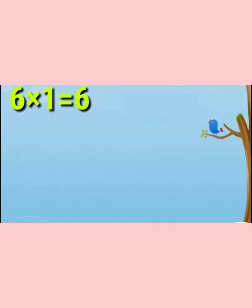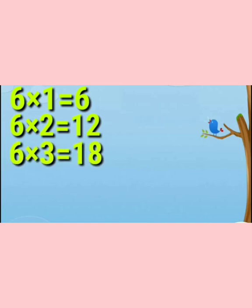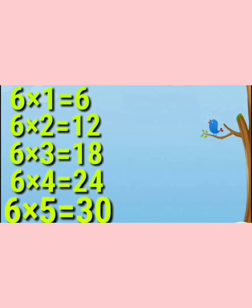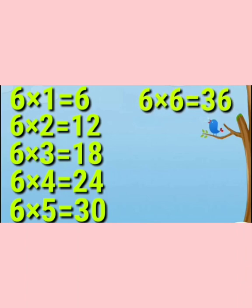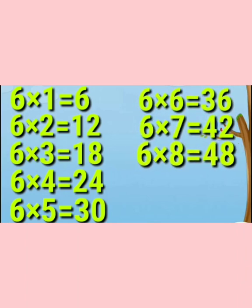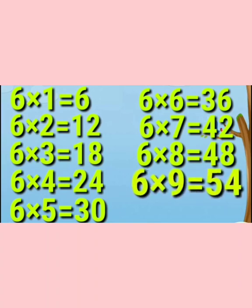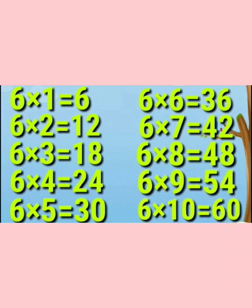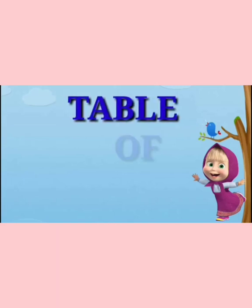Now repeat: 6 ones are 6, 6 twos are 12, 6 threes are 18, 6 fours are 24, 6 fives are 30, 6 sixes are 36, 6 sevens are 42, 6 eights are 48, 6 nines are 54, 6 tens are 60. Now next table is table of 7.